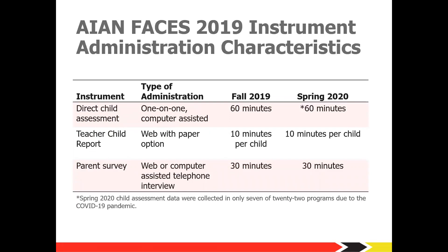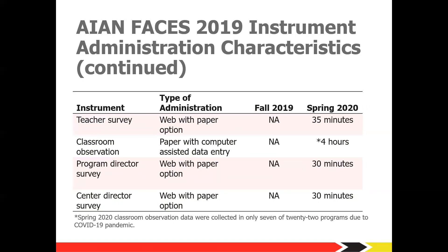In both fall and spring, children participated in a 60-minute one-on-one direct child assessment conducted by trained field staff. Assessors used a web-based instrument on a tablet computer — questions were displayed on their computer, and a second monitor displayed images for the child. In both fall and spring, teachers had the option of completing the 10-minute teacher-child report (TCR) online or using a paper instrument. Parents could complete their survey online or by telephone interview, taking about 30 minutes. In spring 2020 only, a 35-minute teacher survey, classroom observations of about four hours, and a 30-minute director survey were also administered.